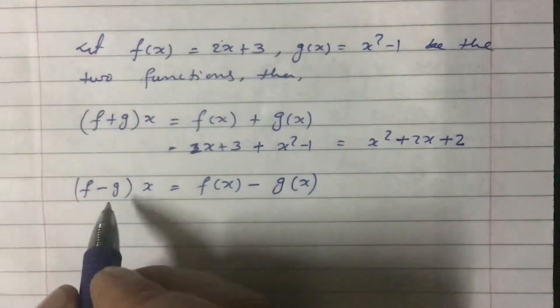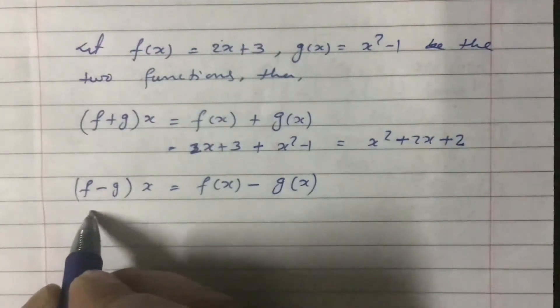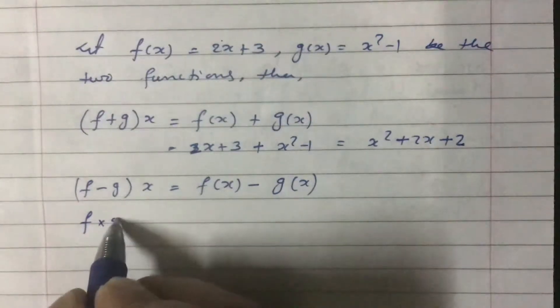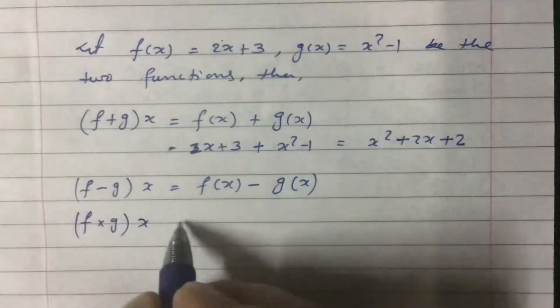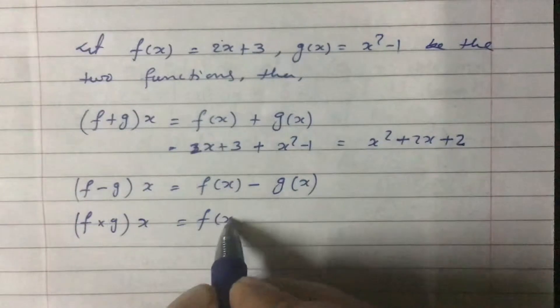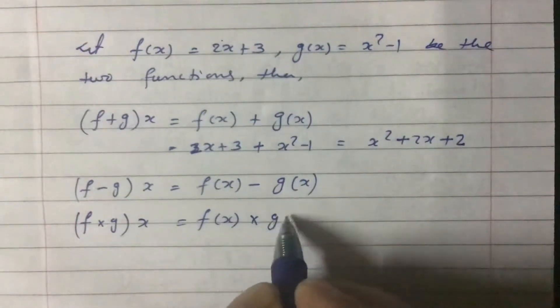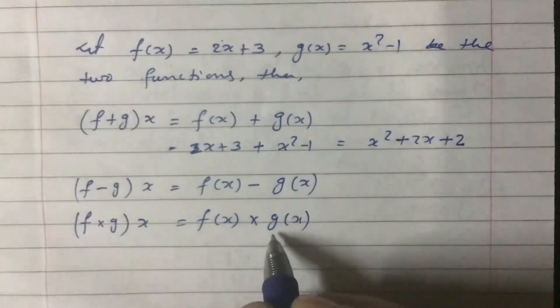Another algebra operation we can do like this: (f times g)x also. This can be written as f(x) times g(x).